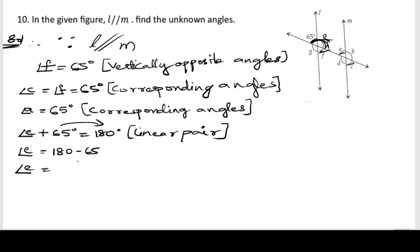If we subtract, 10 minus 5 gives 5, and 7 minus 6 is 1, so angle E equals 115 degrees.